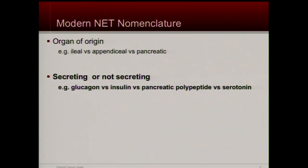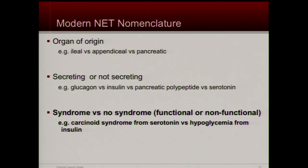We also denote whether it's secreting or non-secreting — meaning, is it making some hormones we can detect in the blood? Sometimes that's glucagon. If it makes insulin, then blood sugars go down, you have hypoglycemia, and you can become very ill. Insulinomas can occur in the pancreas, and we can measure insulin levels and blood sugar levels. There are different ways of monitoring diseases that make these certain substances.